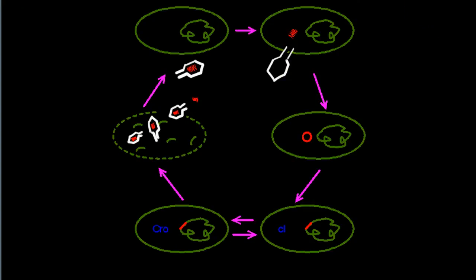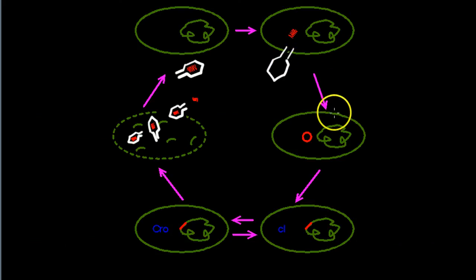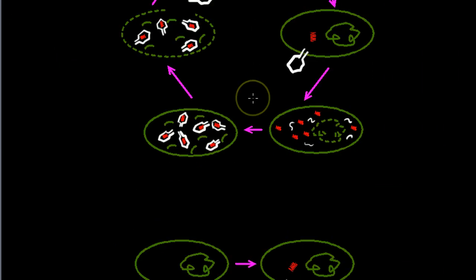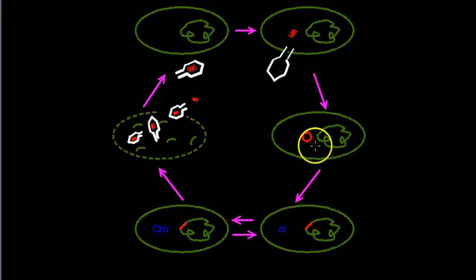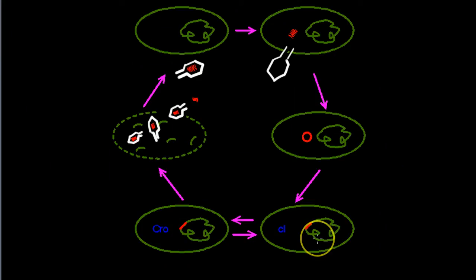The bacteriophage attaches itself and inserts its genetic material into the cell. Instead of replicating by itself as in the lytic phase, it incorporates itself into the host DNA, and that's how it replicates.